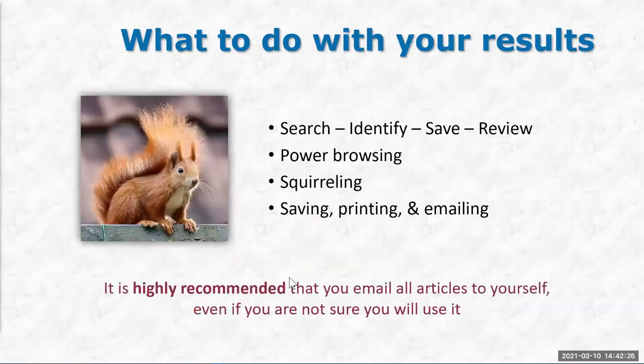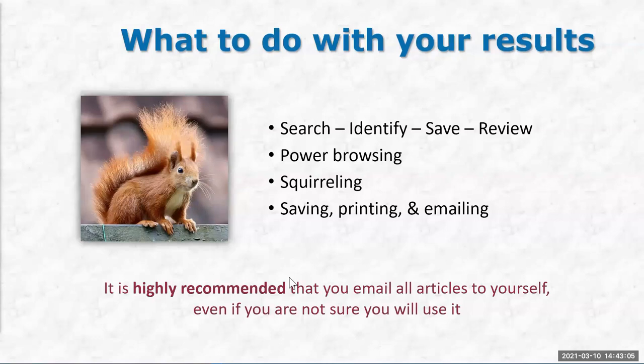What do you do once you've gotten a few resources? The steps are: you're searching using your keywords, looking at what is out there. You might have identified a few articles, and you identify them by doing power browsing. Power browsing means looking at the abstract, looking at the title, looking at the keywords associated with it — and hopefully that gives you enough information to decide whether this might be useful for your topic or too far away from what your assignment requires. You should not be reading every single article as you go through.